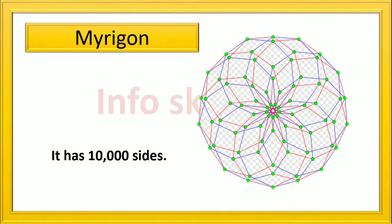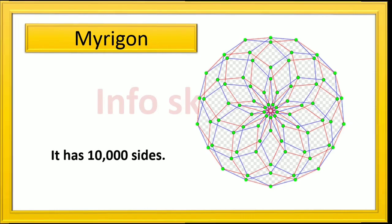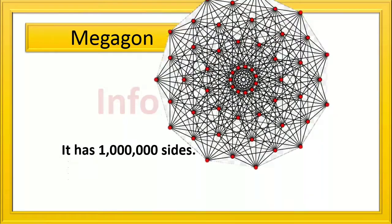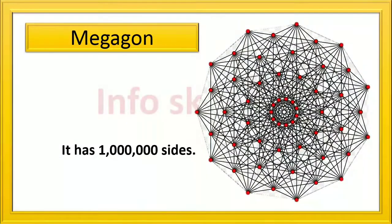Myriagon: it has ten thousand sides. Megagon: it has one billion sides.